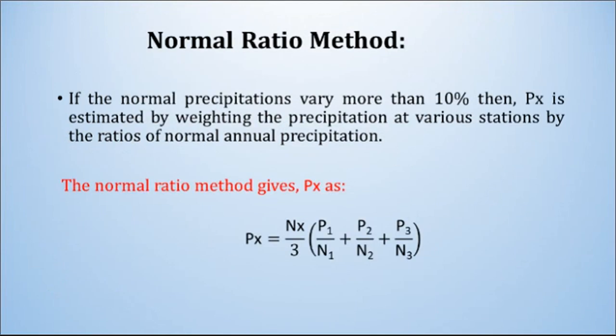The second method is the Normal Ratio Method. If the normal precipitation varies by more than 10 percent, the earlier method is not suitable. Then Px is estimated by weighting the precipitation at various stations by the ratios of normal annual precipitations. The formula is: Px = (Nx / 3) × (P1/N1 + P2/N2 + P3/N3), where P1, P2, P3 and N1, N2, N3 retain their earlier meanings.